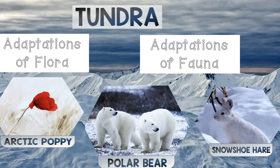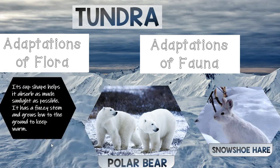Let's take a look at some of the different wildlife in the tundra. First, our flora — our plant life. We'll look at a type of flower called the arctic poppy. The arctic poppy has a cup shape to its flower, which helps it absorb as much sunlight as possible. It has a fuzzy stem and it grows low to the ground, which helps it to keep warm.